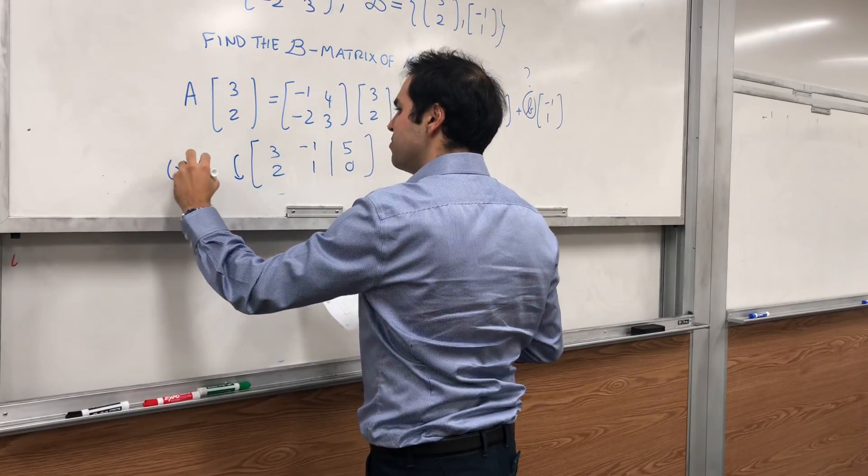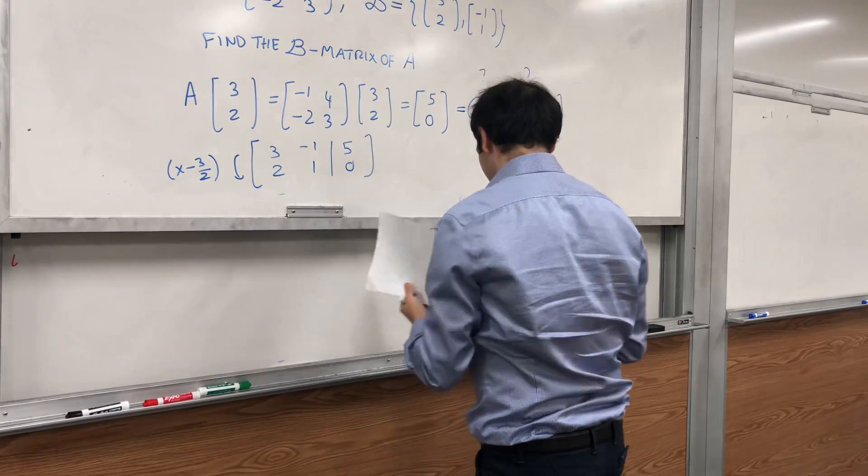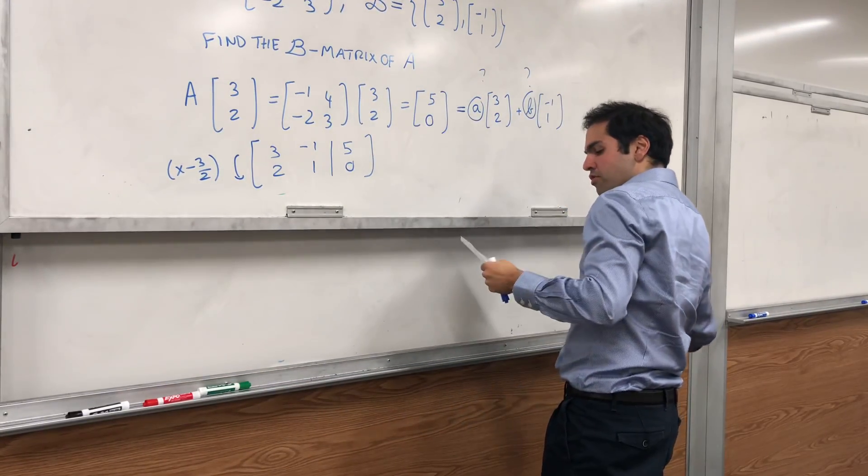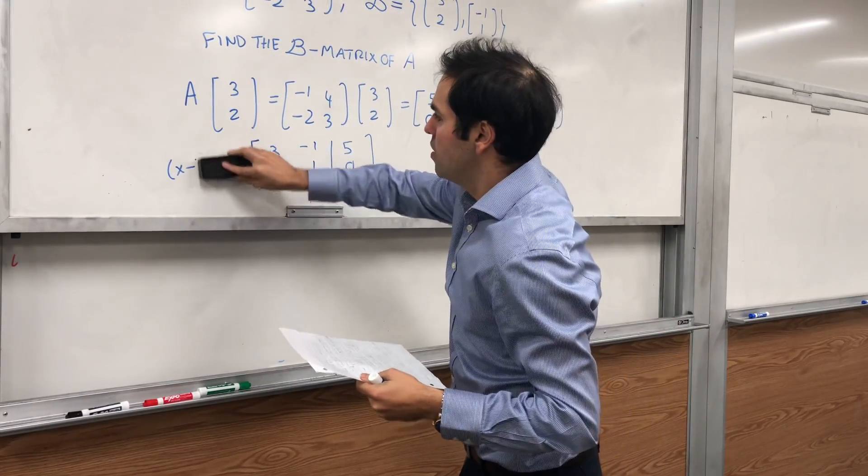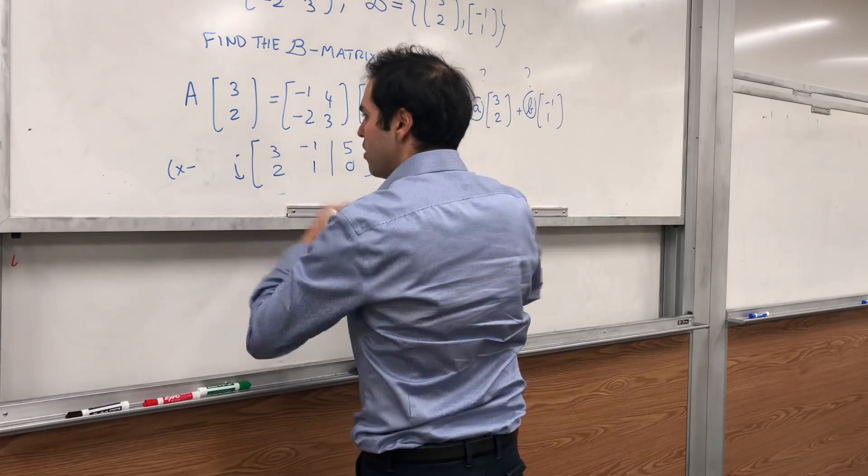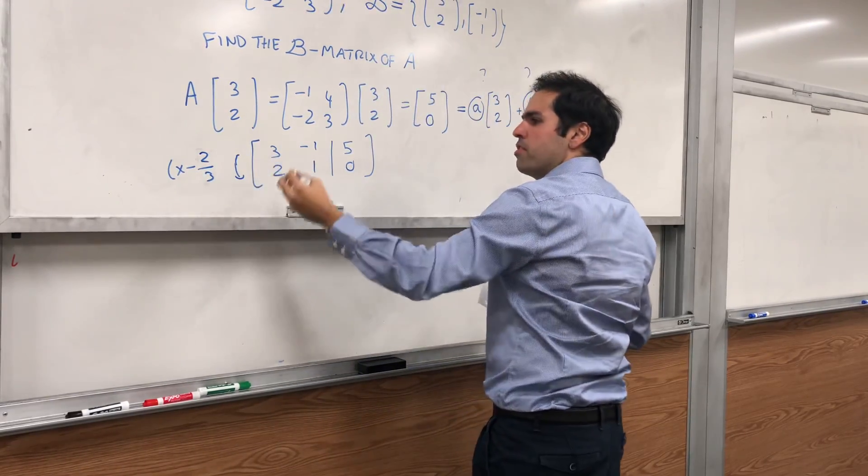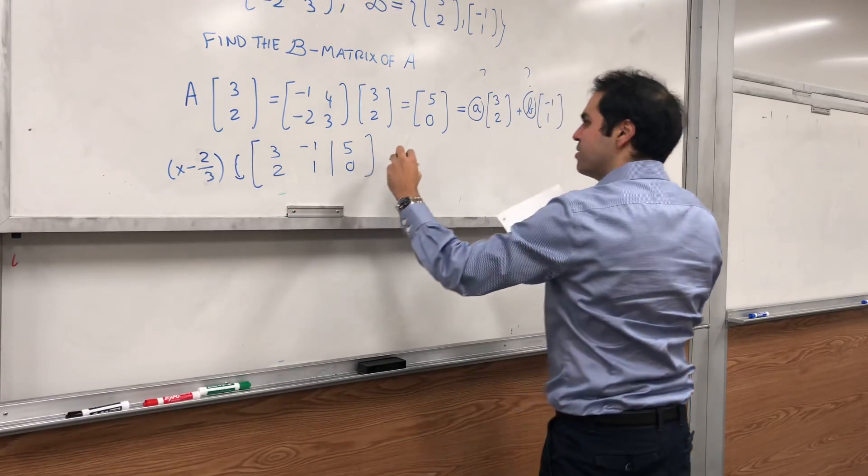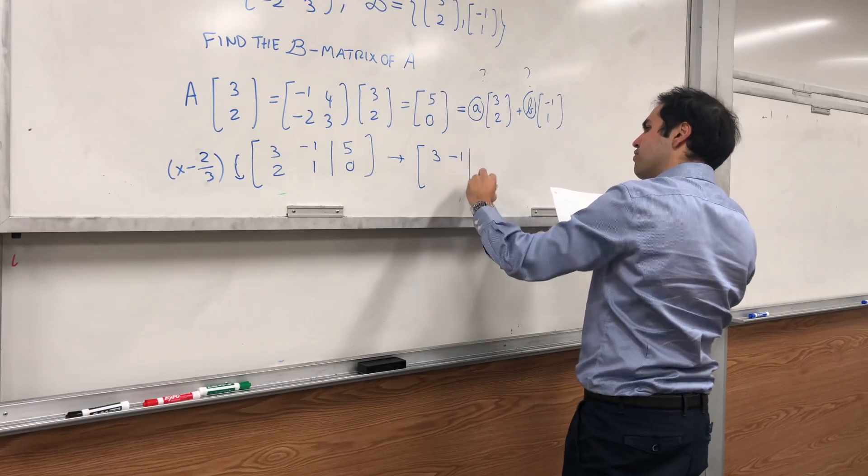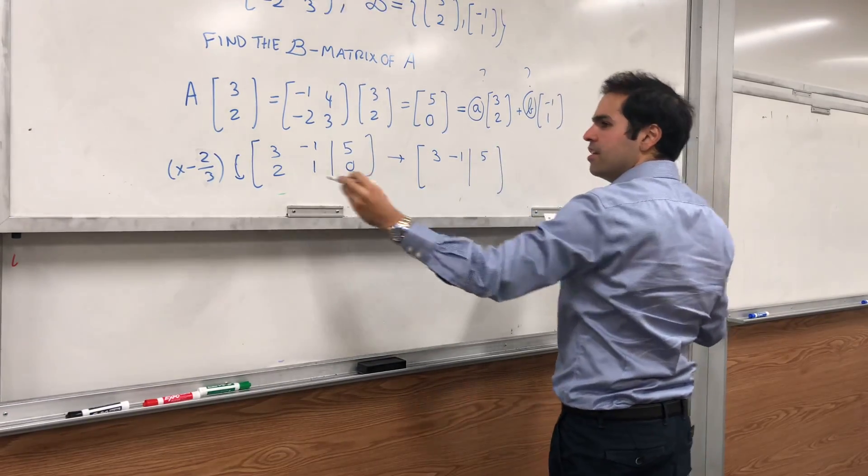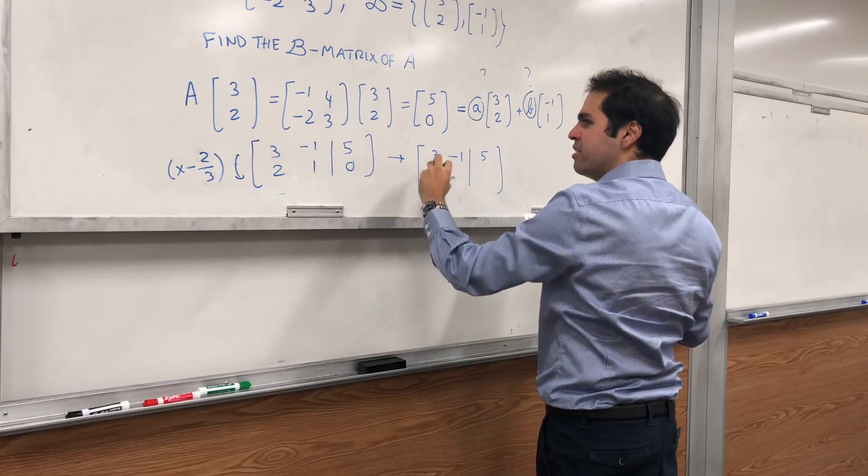Let's multiply the first row by -2/3 and add it to the second row, because -2/3 is the thing that transforms 3 into -2, and that's what we want. Then we get again [3, -1, 5] and then 3 times -2/3, that's -2, plus 2 is 0.